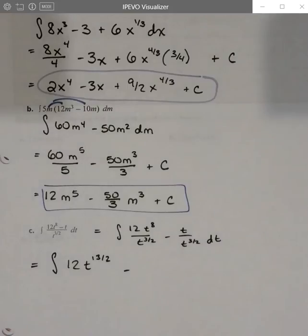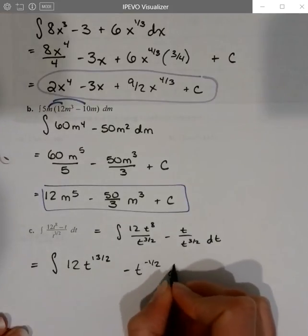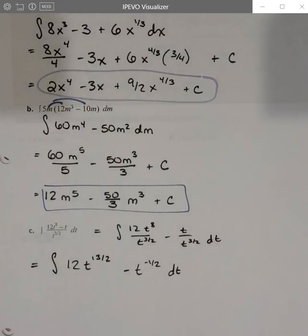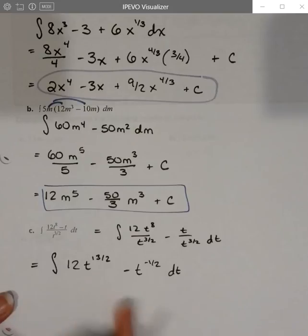And then 2 halves minus 3 halves. That's t to the negative 1 half. Just getting common denominators and subtracting those powers. Now that you have them piece by piece as part of a sum or difference, you can integrate them separately.